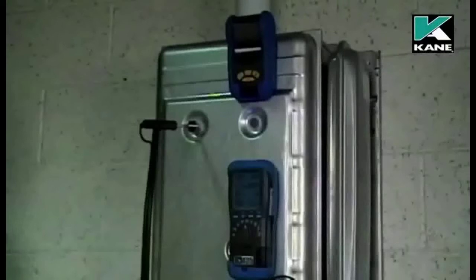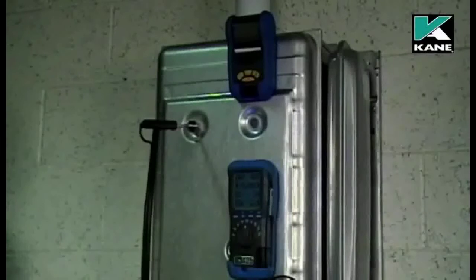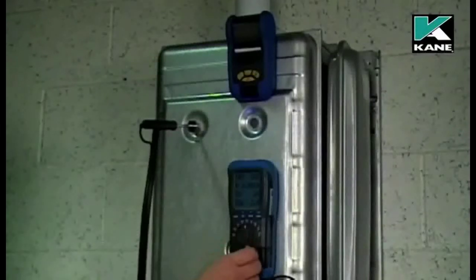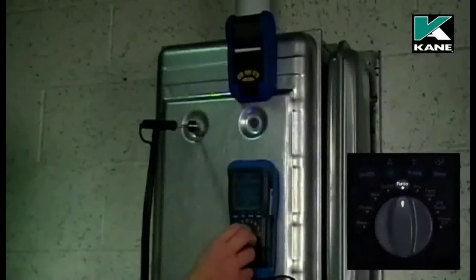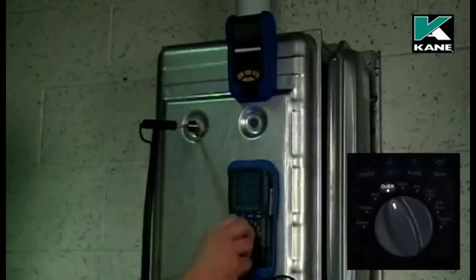When the readings are stable and you want to do a combustion printout, the rotary switch can either be in the ratio position, oxygen efficiency or the auxiliary position.